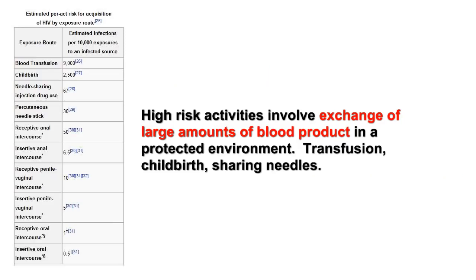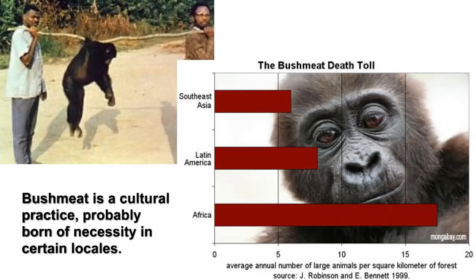We know that SIV and HIV are both spread in the same ways: sex and blood transfers. Blood-to-blood exposures, however, are 900 times more likely to result in infection than sex contact. It's therefore likely that the transmission from primate to human — called a zoonotic event — was the result of hunters trapping, butchering, and eating chimps. The practice of hunting primates for what is called bushmeat is well documented in tribal groups in certain areas.